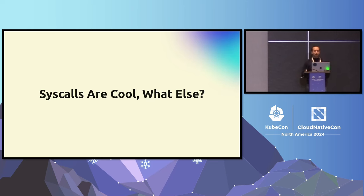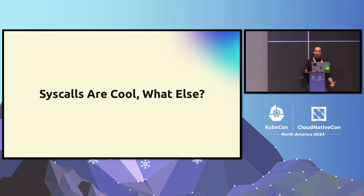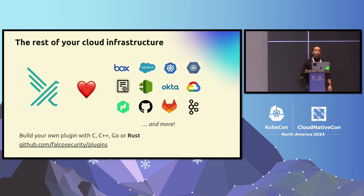Later during the evolution of the project, we thought that syscalls are cool — these events like opening a file, creating a process — are system calls in the kernel. But what else can we monitor? We have Kubernetes audit events, and cloud providers have their own audit logs. So we created a plugin system, now a couple of years old, that has more than 20 plugins. You can pretty much monitor whatever you want.